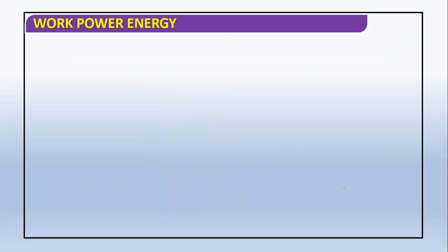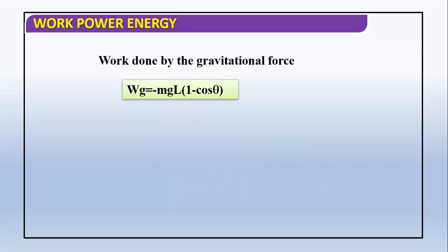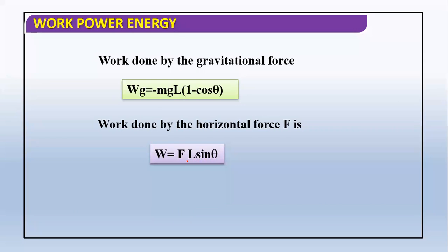So work done by gravitational force is negative mgL times one minus cos theta, where L times one minus cos theta is the height h. Work done by horizontal force F is F times L sin theta, because L sin theta is the displacement in the direction of this force.